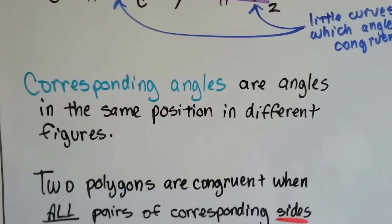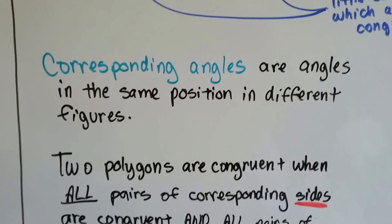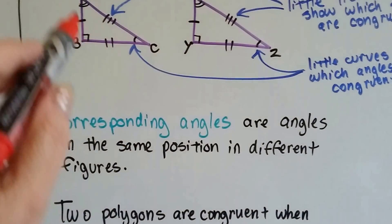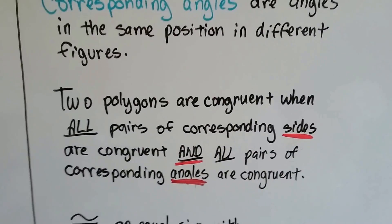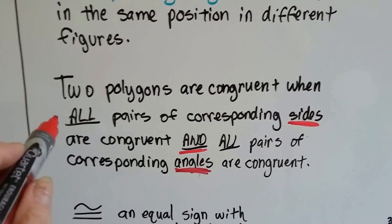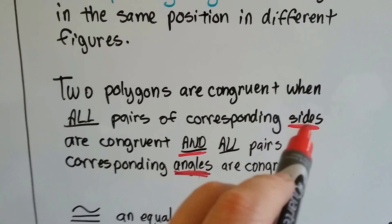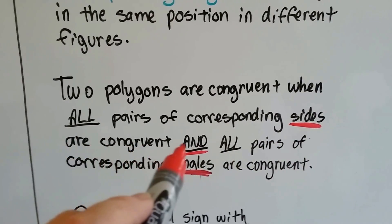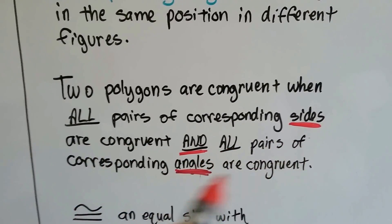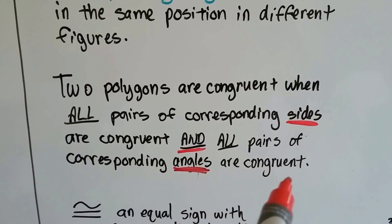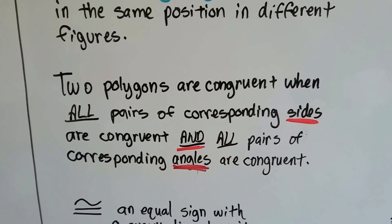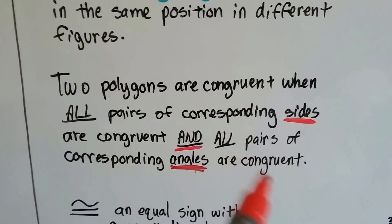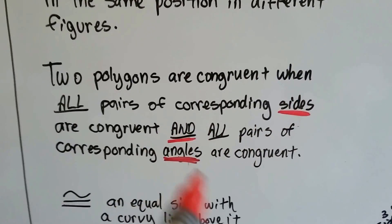So corresponding angles are angles in the same position in different figures. So these are corresponding angles, A and X. Two polygons are congruent when all pairs of corresponding sides are congruent and all pairs of corresponding angles are congruent. So all the sides and all the angles have to be congruent. Not just the sides, not just the angles, it's got to be sides and angles.